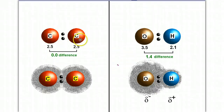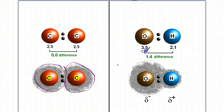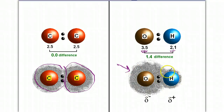Notice we have two carbon atoms here with equal electronegativity, meaning they have an equal ability to attract electrons to themselves — which is why the electron cloud around them is equal in size. Over here, oxygen has a higher electronegativity than hydrogen. Because oxygen has a stronger ability to attract electrons, it has a larger portion of the electron cloud surrounding it, while hydrogen has a smaller electron cloud surrounding it.